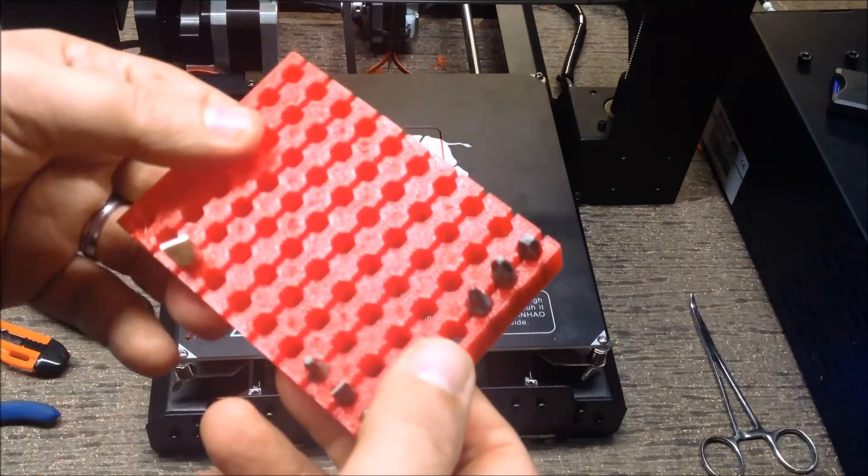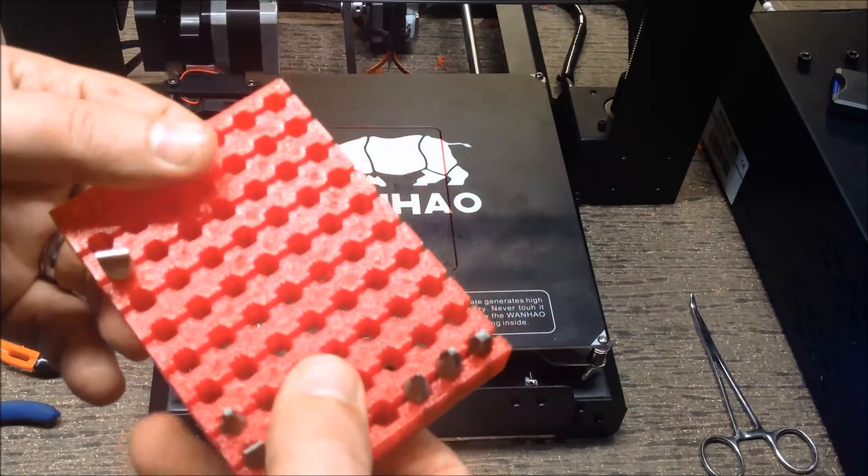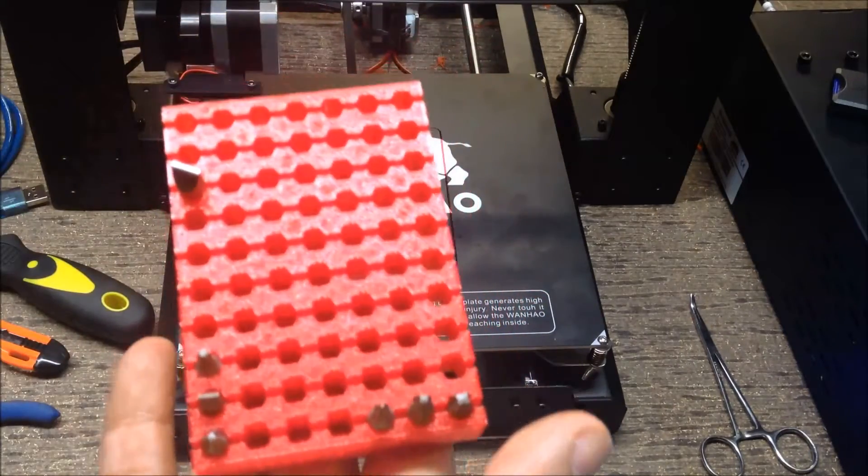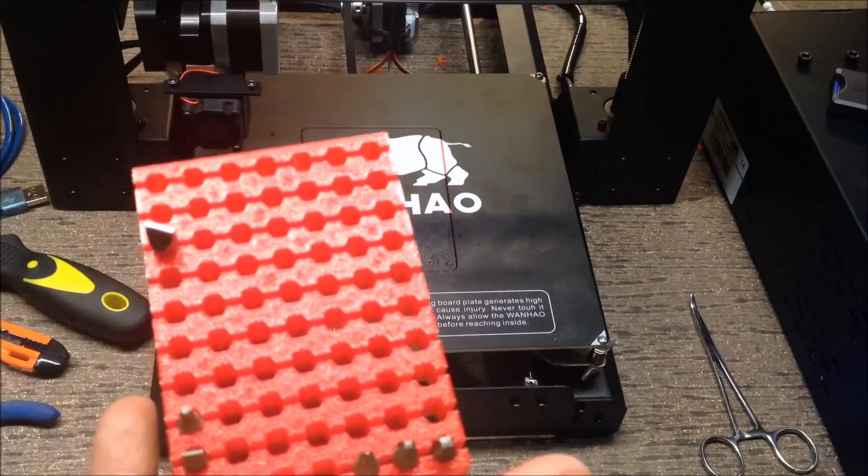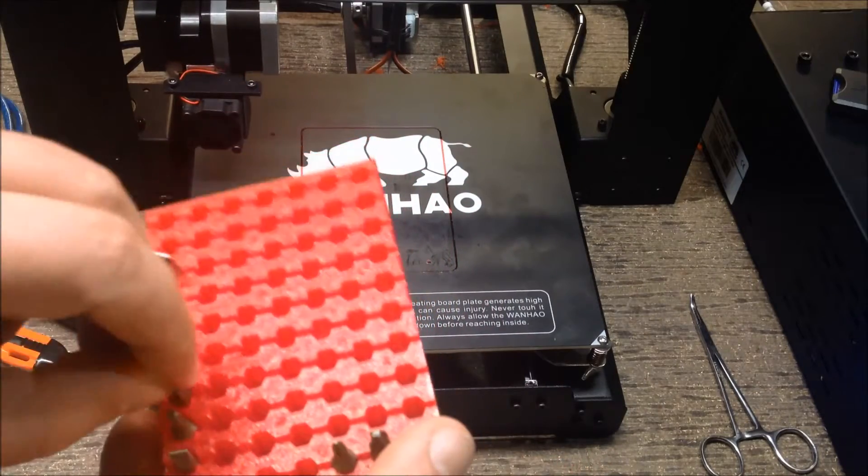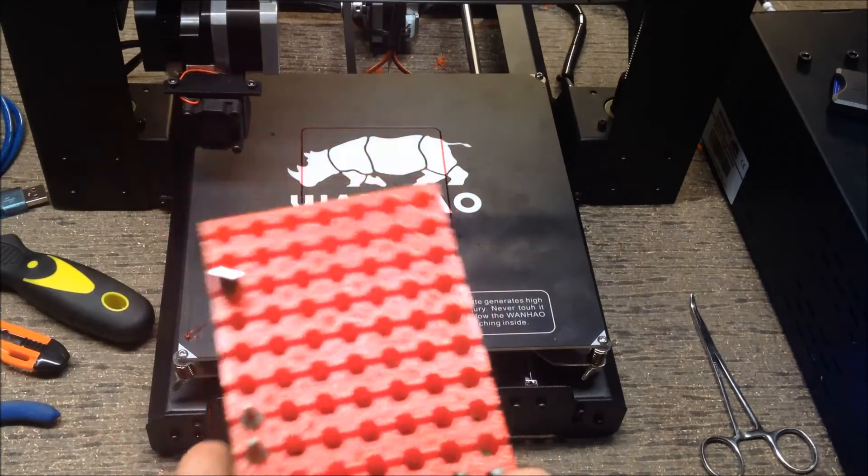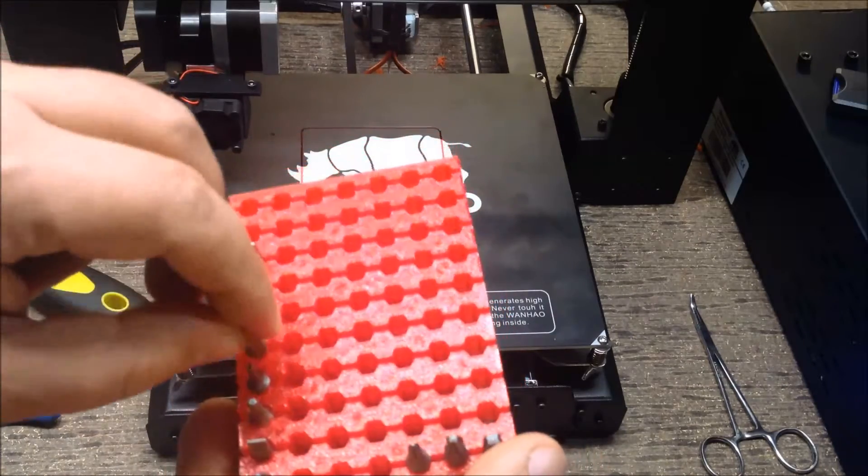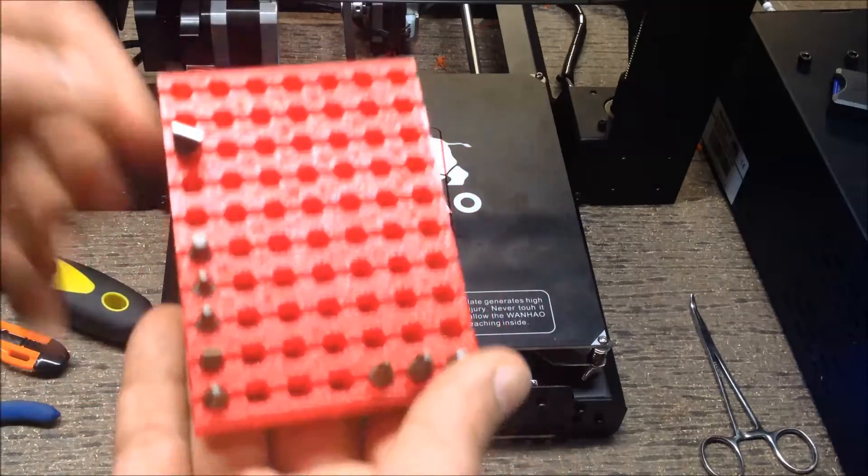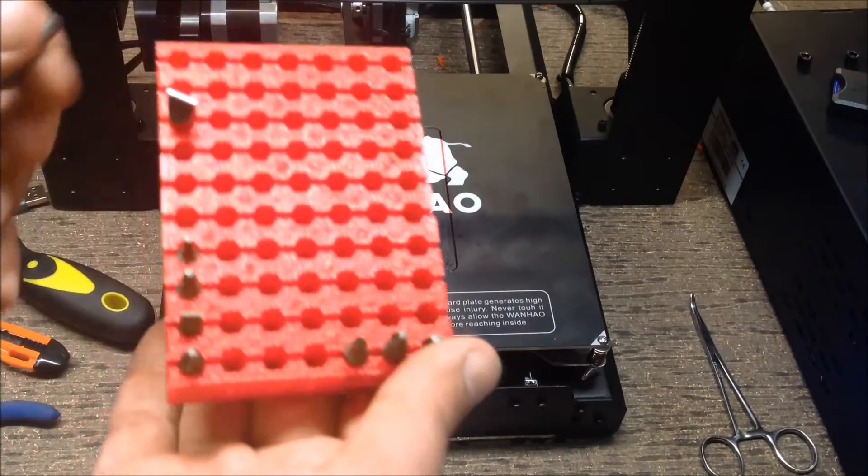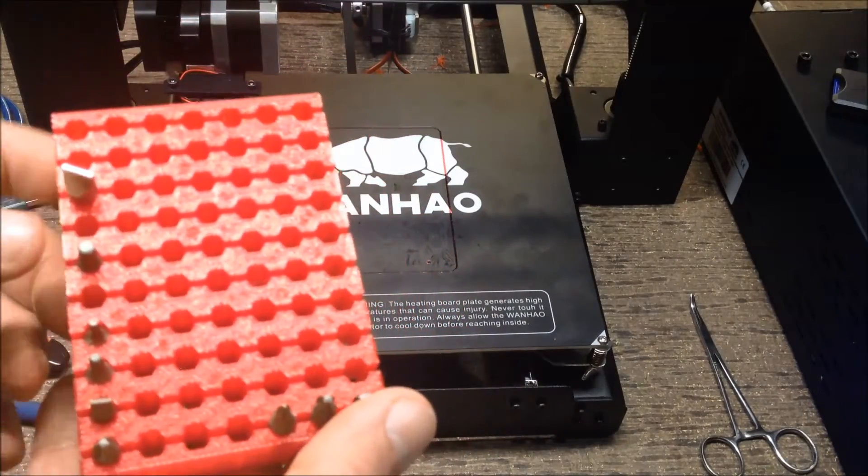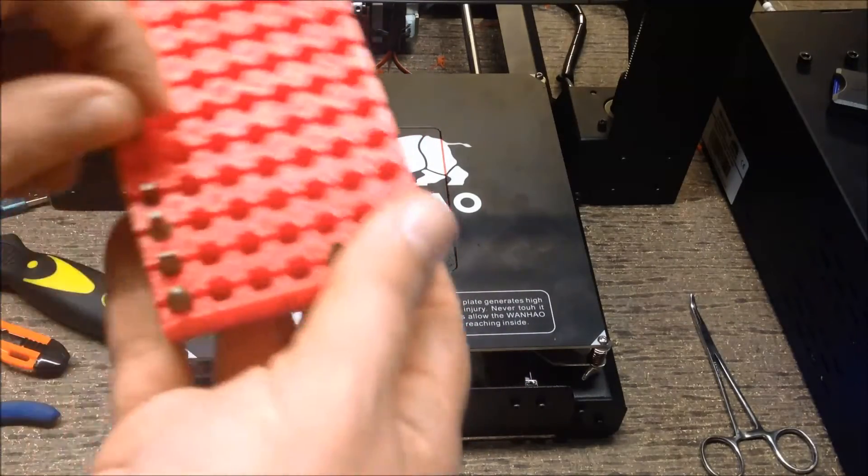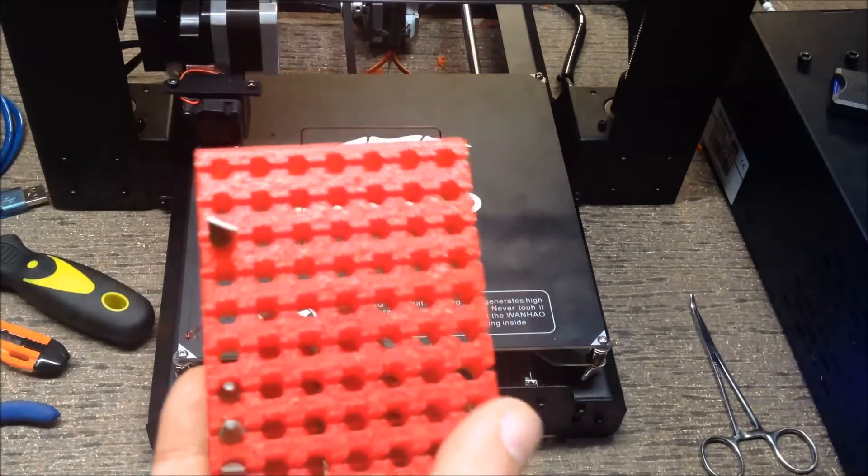I think if I were to do it again, I'd print one with a bit of a bottom on it to hold them in place. Because this does not, if I print this in ABS, and I have printed this in ABS before, the expansion is quite a bit more. So, this would actually be held in a lot tighter. It's not too bad. If it sits on a desk or something, it's not.